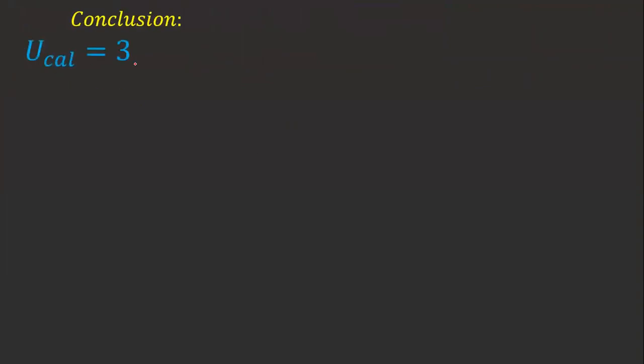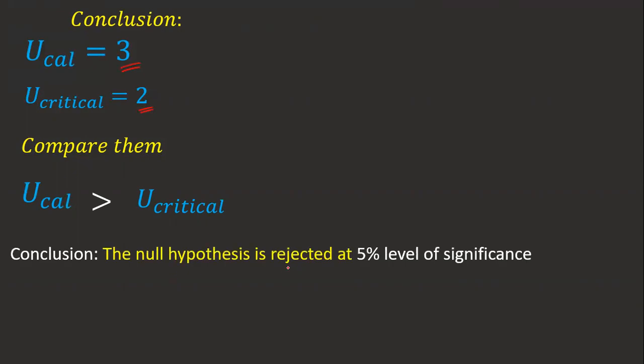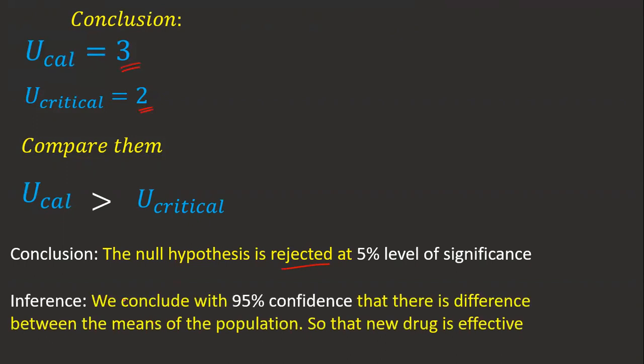Comparing: U calculated = 3 and U critical = 2. Since U calculated is greater than U critical, we reject the null hypothesis at the 5% level of significance. We conclude with 95% confidence that there is a difference between the means of the populations, and therefore the new drug is effective. If you have any doubts, put them in the comment box. Please like, share, and subscribe. Thank you and have a good day.